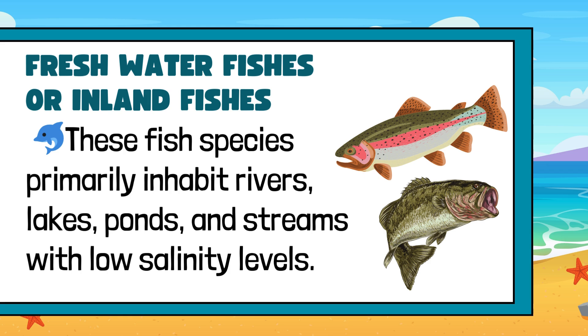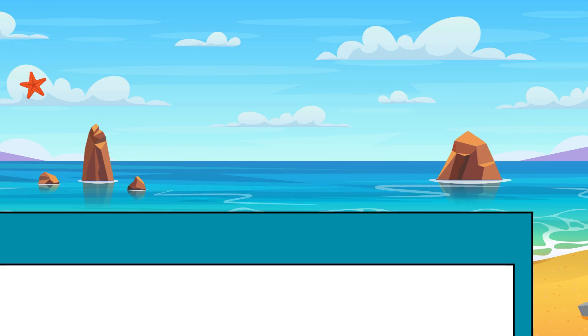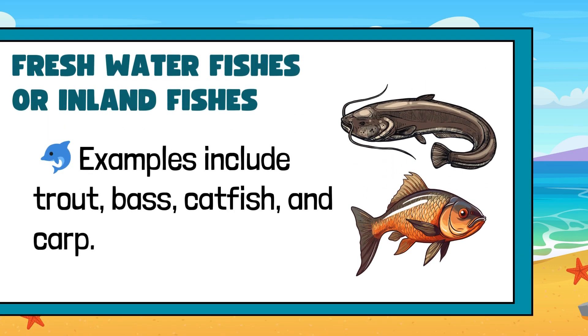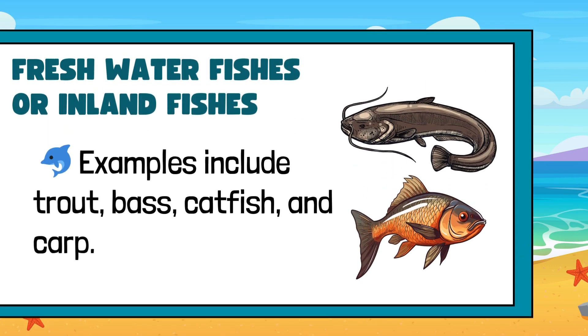Freshwater fishes are inland fishes. These fish species primarily inhabit rivers, lakes, ponds, and streams with low salinity levels. Examples include trout, bass, catfish, and carp.